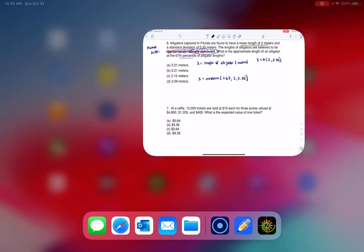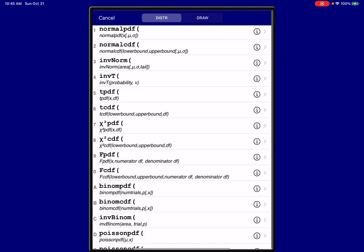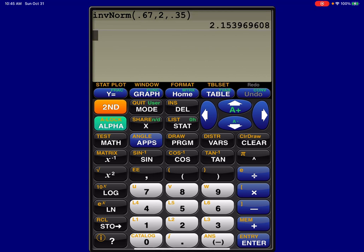So I'm going to head over to my calculator. Let me clear this out. Let's take a look at inverse norm, and we're going to put in 0.67, and we had a mean of 2, and a standard deviation of 0.35, and that's looking at about 2.15.